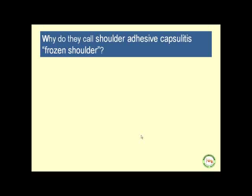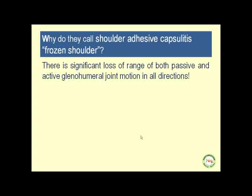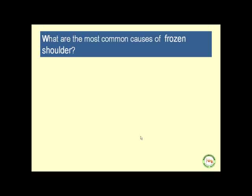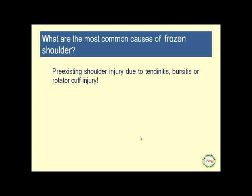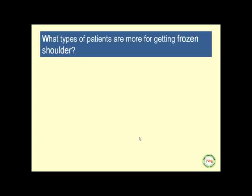Why do they call shoulder adhesive capsulitis "frozen shoulder"? Because there is significant loss of range of both passive and active glenohumeral joint motion in all directions. The most common causes of frozen shoulder include pre-existing shoulder injury due to tendinitis, bursitis, or rotator cuff injury.